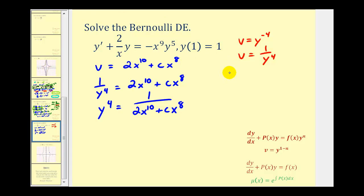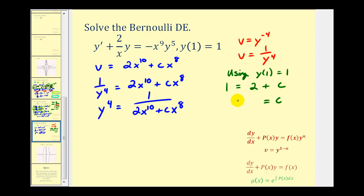Using y of 1 equals 1, we'll use this form of the solution to find c. If y equals 1, the left side is 1. On the right side, if x is 1, we have 2 times 1 to the 10th, which is 2, plus c times 1 to the 8th, which is c. So 1 equals 2 plus c, giving us c equals negative 1. The particular solution to this initial value problem is y to the 4th equals 1 divided by 2x to the 10th minus x to the 8th.